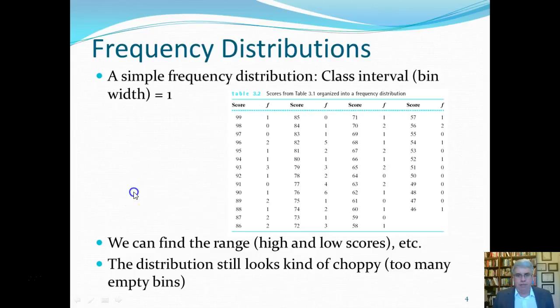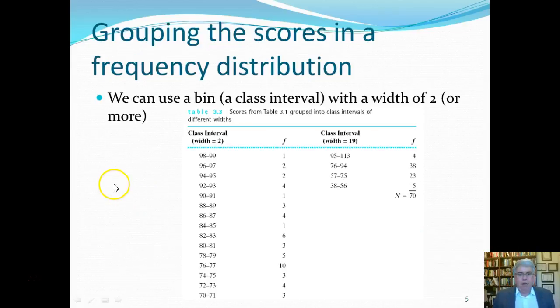So we could arrange it differently. We could try a bin width of two, where here we have all the 98s, 99s together, 96s and 97s, 94s and 95s. And that gives us a good illustration of what's happening. There's still a lot of numbers, a lot of 76s and 77s.